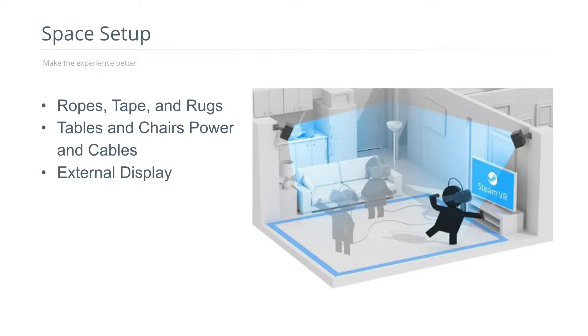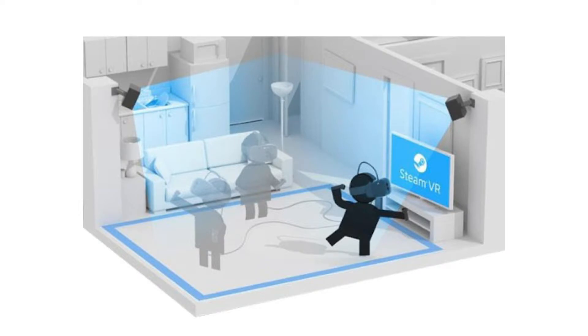For space setup, the clear space you defined during room setup needs a physical counterpart in the real world. Velvet ropes are an obvious option; at a bare minimum, use tape outlined on the floor so people moving through the space can see it. An area rug is great because it also provides a tactile element — the user's feet can detect when they're starting to go out of bounds. Make sure there are chairs for people waiting, tables for external monitors and laptops, and don't overlook extension cables — you'll almost certainly need to run power out to all the equipment.